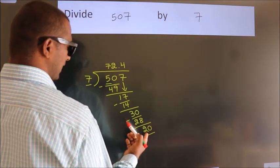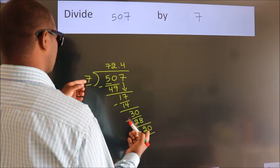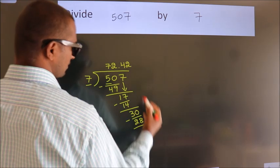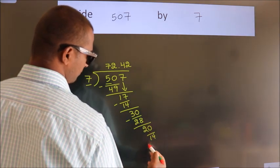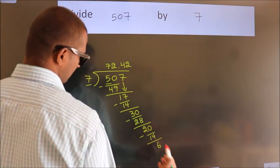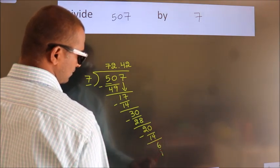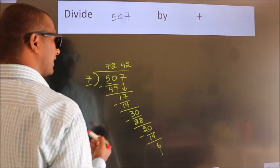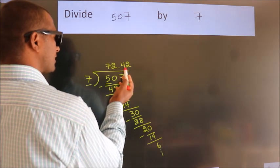A number close to 20 in the 7 table is 7 times 2 equals 14. Now we subtract. We get 6, and the division continues. It is enough if we do up to two decimal places.